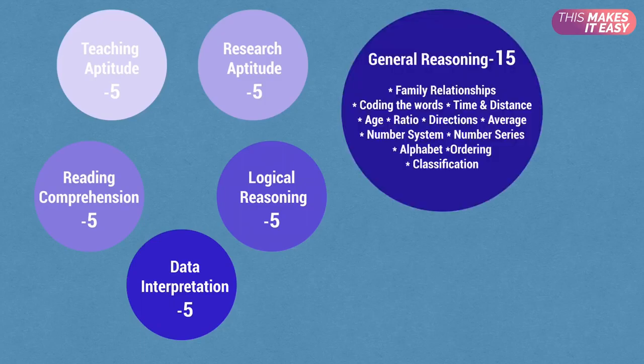Now the sixth topic is general reasoning. It includes family relationship - for example, what is the relationship between A and B - and coding the words. There will be two words given, we have to find the relationship between the words. Accordingly we have to find a fourth word for the third word given. Then it includes time and distance, age - what is the present age, ratios, questions related to directions. One man went to south for 10 meters, then turn left, then turn right - then what is the distance from starting point to end point? Then the questions related to average.